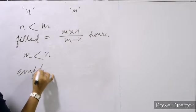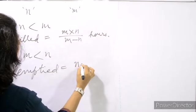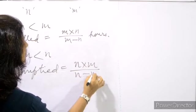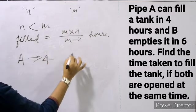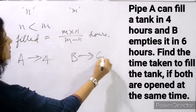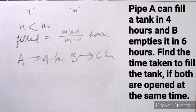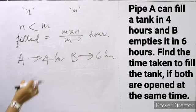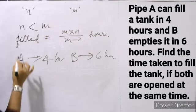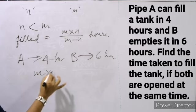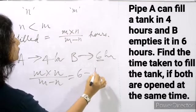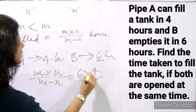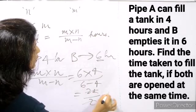Pipe A can fill a tank in 4 hours and B can empty the tank in 6 hours. If both pipes are open simultaneously, how much time will it take to fill the tank? Using the formula m into n divided by m minus n: that is 6 × 4 divided by 6 minus 4, which equals 24 divided by 2 = 12 hours.